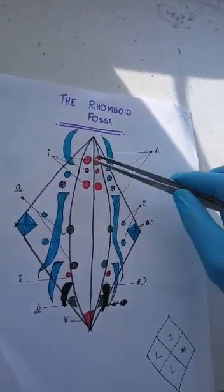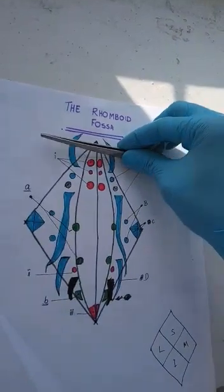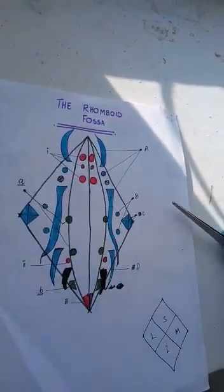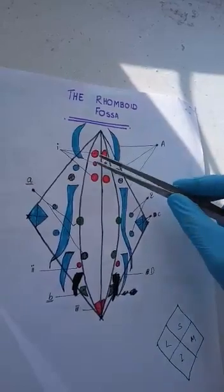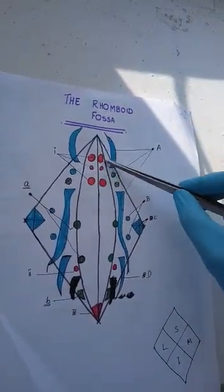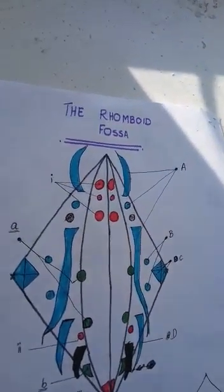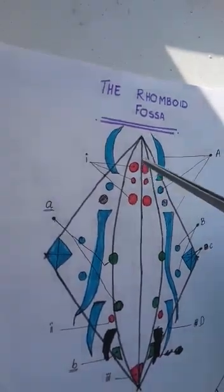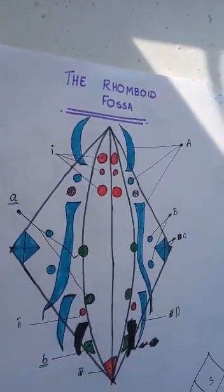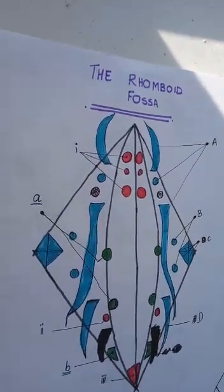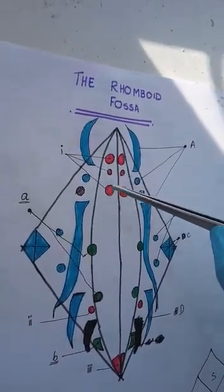Above this region is the pons and below is known as the medulla oblongata. First we go to the nuclei in the pons region — the motor nuclei in the pons region. These are the fifth, sixth, and seventh cranial nuclei.